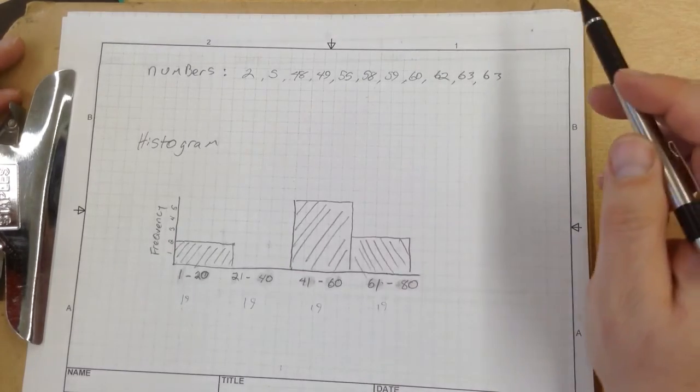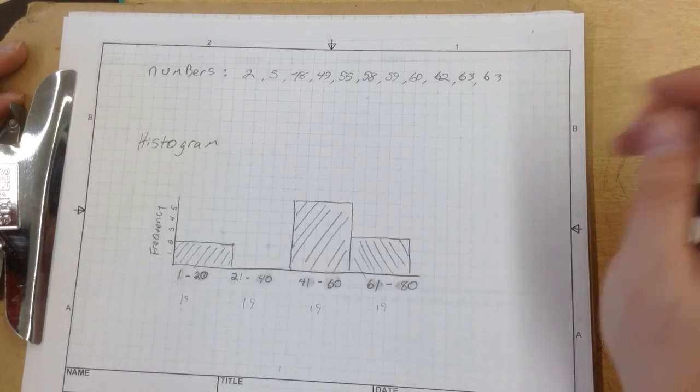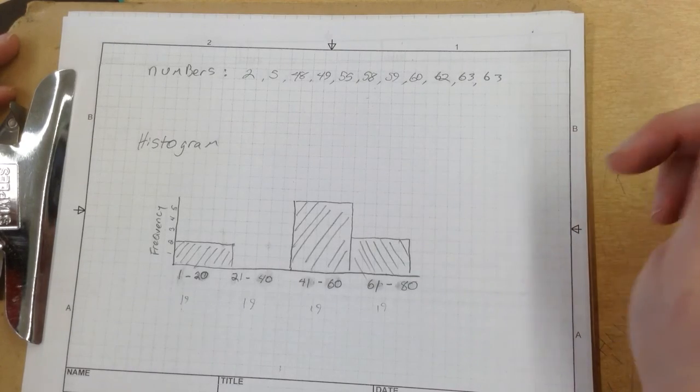So now this histogram is a pictorial representation of the numbers in our data set. Stop this video, rewind, replay, as many times as you need to get the concept.